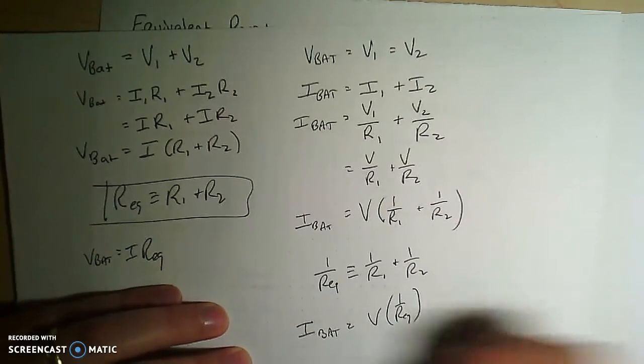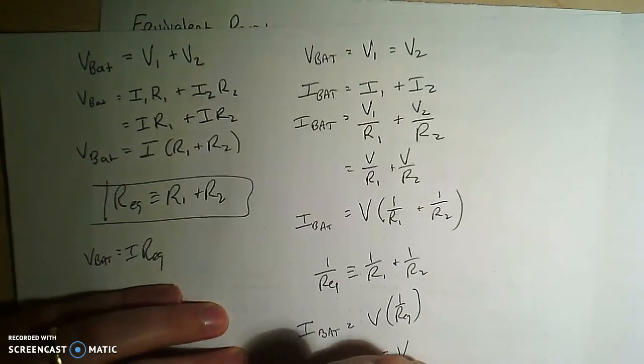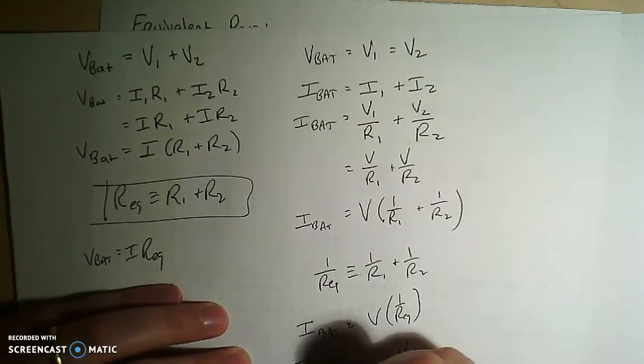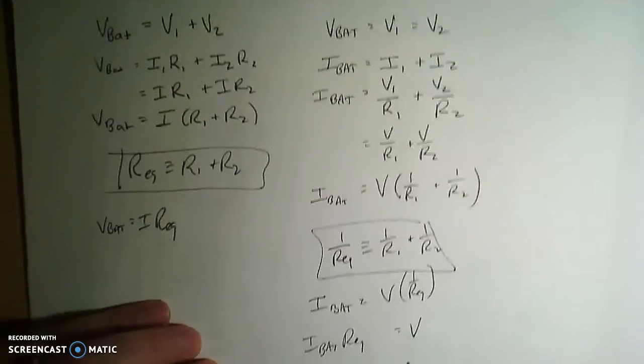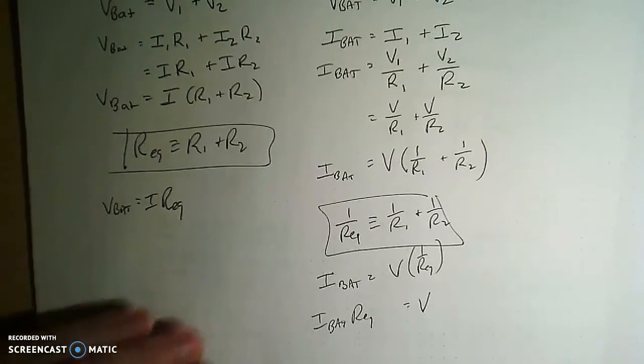And then if I multiply both sides by REQ, I get that V equals I battery times REQ. And again, I can recover Ohm's law, V equals IR from that.